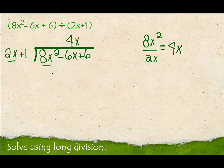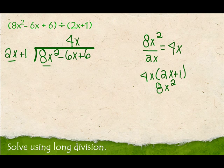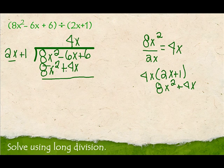To figure out what goes underneath, I'm going to distribute 4x into 2x plus 1. 4x times 2x is 8x², and 4x times 1 is 4x. So that gives us 8x² plus 4x. Now, we always say we subtract down, but I think adding is easier — so if I change my signs, I'm going to add down. It's the same thing as subtracting.